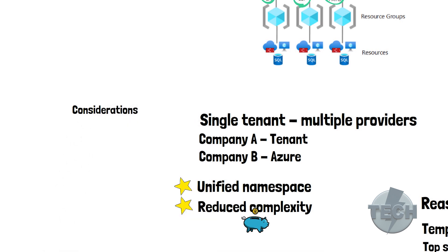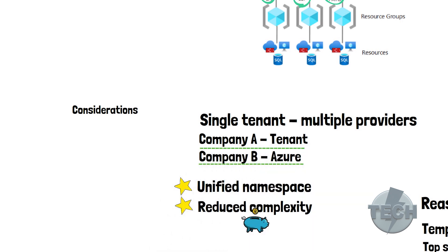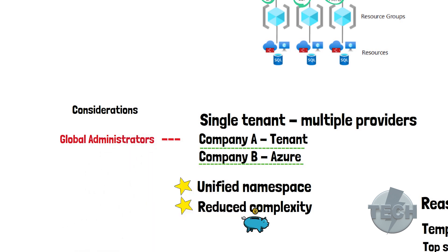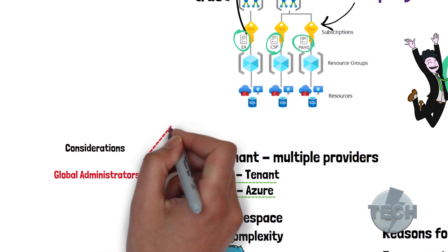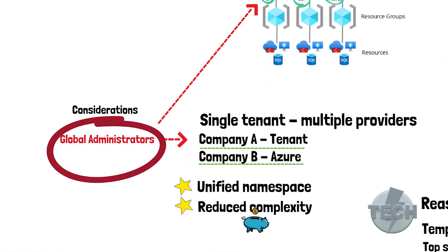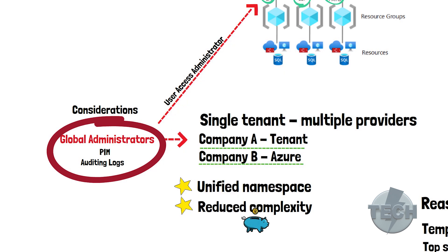Here are some considerations to keep in mind if you decide to go for a single tenant solution where you have one party managing Azure and another managing Azure AD. The owners of the tenant are also global administrators. Global administrators are able to grant themselves rights on Azure subscriptions. You cannot prevent this and the only way to mitigate it is by the use of PIM and auditing the logs. Global administrators do not immediately have access to all your subscriptions, but they can elevate their privileges to what is called User Access Administrator and get access to your subscriptions that way.